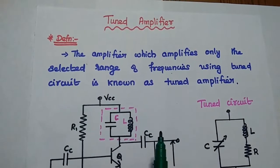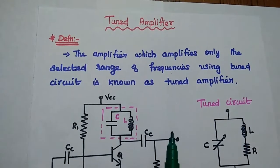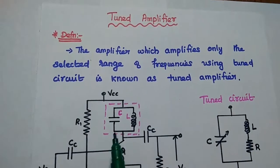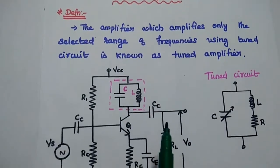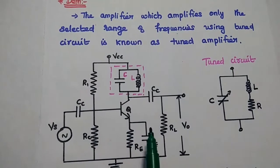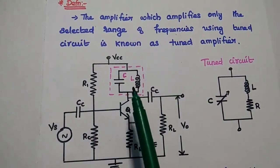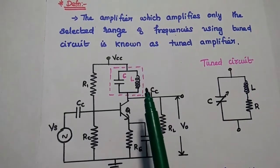So here we are going to amplify only the selective range of frequencies using tuned circuit instead of the resistive load. This is the diagram of single tuned amplifier where we can replace the collector resistance with this tuned circuit.